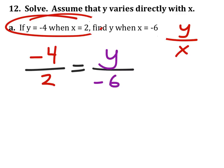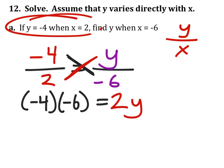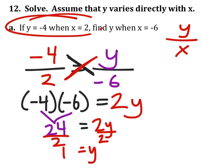From here you can cross multiply, so that would be negative 4 times negative 6, which equals 2 times y. Negative 4 times negative 6 is 24, this equals 2y, and if we divide both sides by 2, we find that y is 12.